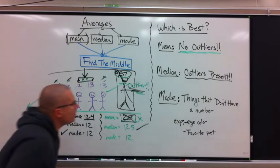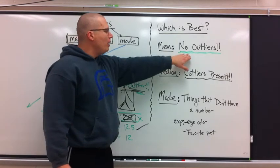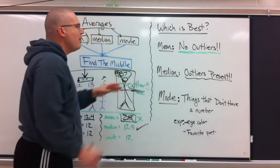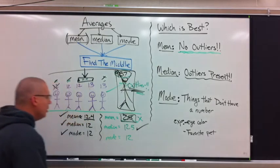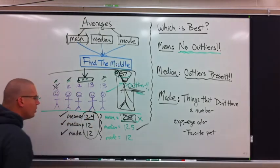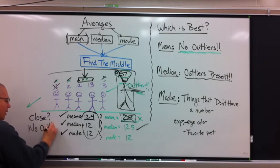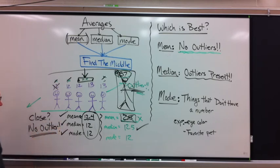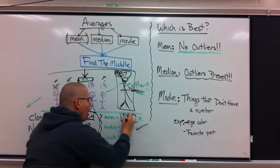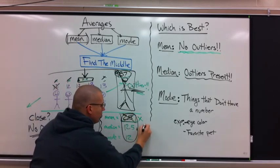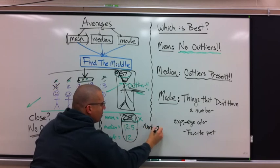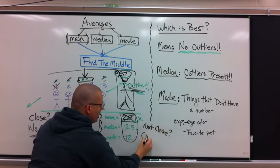Here's the biggest thing. Mean is bad when there is an outlier present. Now, if you look at the numbers and don't know, how would you know? Check. Are the three averages close together? If they are close, that means no outlier. That's real important. If the numbers are close together, that means they're all doing their job. There is no outlier. What if the numbers are not close together? If my answers are not close, there is an outlier.